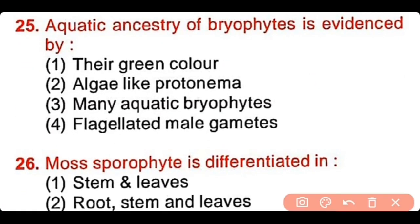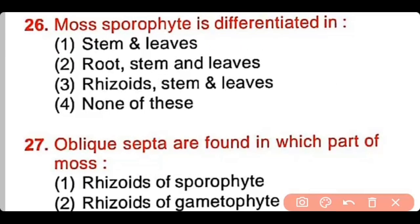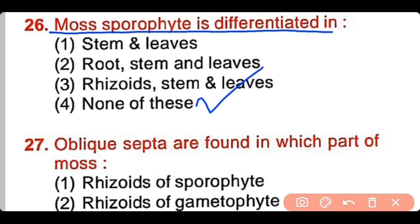Question number 25: The aquatic ancestry of bryophytes is evidenced by their green color, algae-like protonema, many aquatic bryophytes, or flagellated male gametes. The correct answer is option 4. The presence of flagellated male gametes indicates that the bryophytes' ancestors were aquatic. Question number 26: Moss sporophyte is differentiated into stem and leaves, root stem and leaves, rhizoids and stem and leaves, or none of these. The correct answer is option 4 — mosses are not differentiated into root, stem and leaves; rather, the sporophyte is differentiated into seta and capsule.